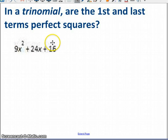So set up your parentheses for your two binomials. Put in on the left the square root of the 9 and the square root of the x. Put in on the right the square root of the 16. So now I've got 3x, I've got 4 in both places.